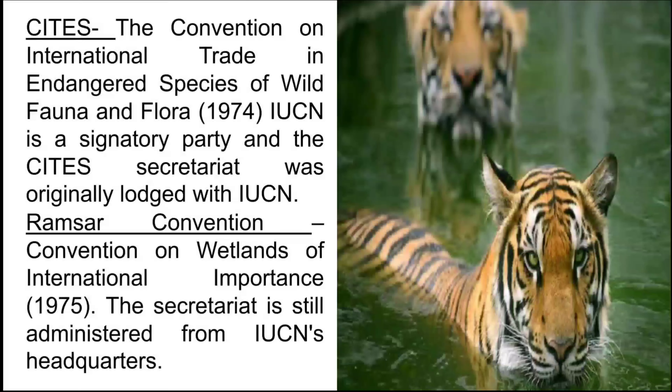The first is Loktak Lake and the second is Keoladeo National Park. Loktak Lake is located in Manipur and Keoladeo National Park is located in Rajasthan. India has 37 sites which are wetlands of international importance in the Ramsar list.